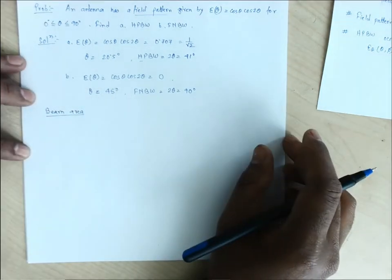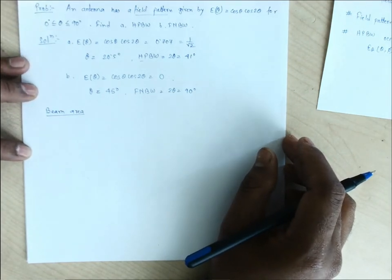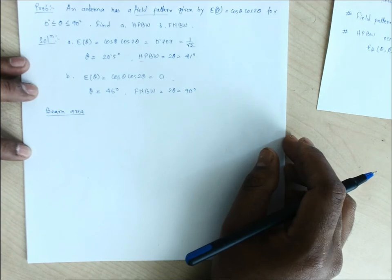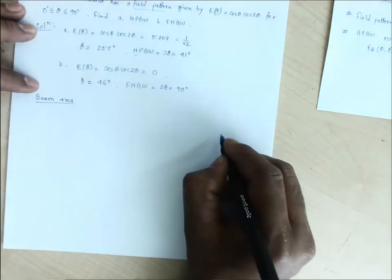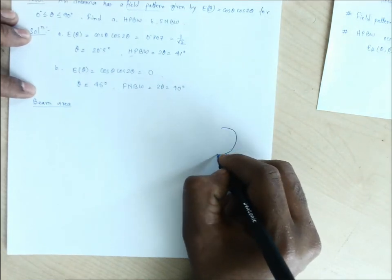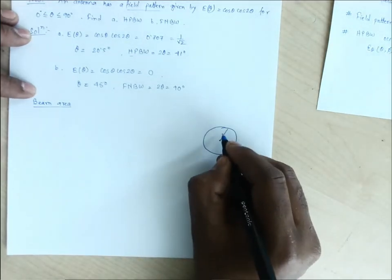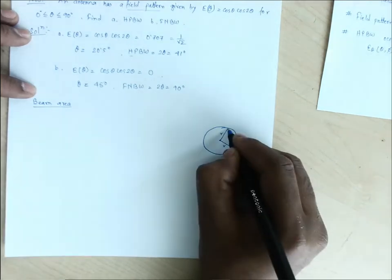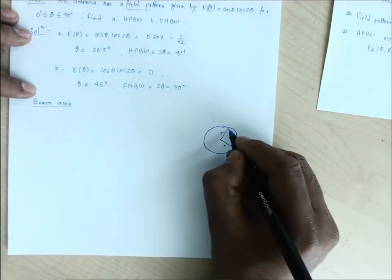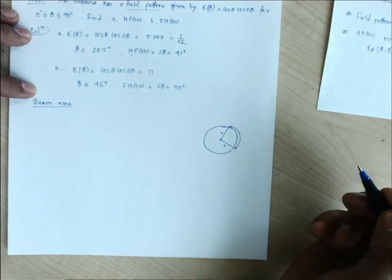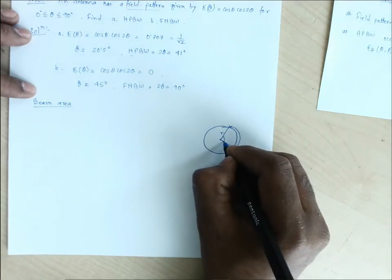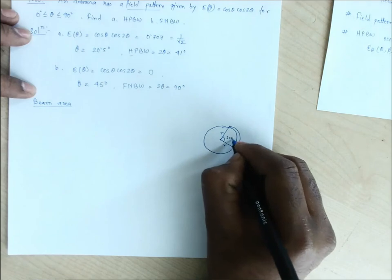Before understanding beam area, we need to understand what a radian is. A radian is the angle subtended by an arc of a circle, where the length of that arc equals the radius of that circle. If we have a circle with radius r, and we take an arc length equal to r, the angle subtended at the center of the circle by that arc is one radian.